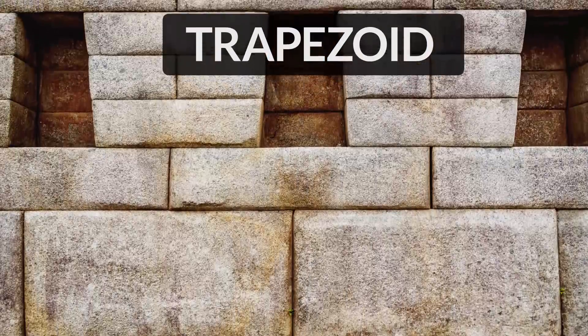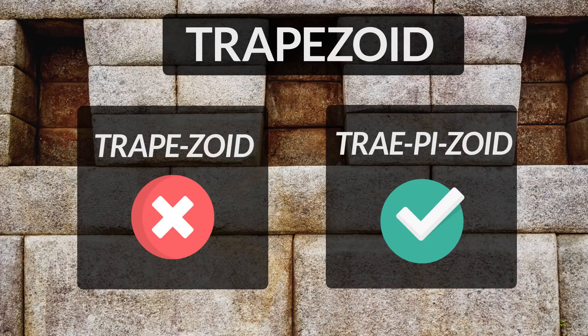Trapezoid is a flat shape with four sides, two of which are parallel to each other. It is often incorrectly pronounced as trapezoid. Please remember, breaking the word into 'trape' and 'zoid' is an incorrect way to pronounce it.